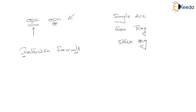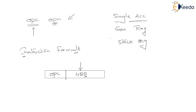Let us recall the instruction format in the single accumulator organization. In the single accumulator organization, we do have a 16-bit instruction — initially we have an opcode, followed by an operand. Here, the operand will be available in the form of an address, let us say 420. This is an address of an operand, which means that the single accumulator organization supports one operand within an instruction. That is, single accumulator organization supports one operand, and the other operand is always the accumulator — accumulator = accumulator + M[420]. In the single accumulator organization, the second operand is always the accumulator, which is also called the implicit operand or implied operand.